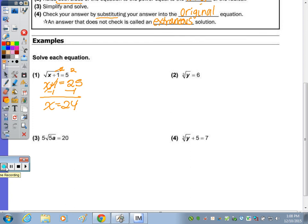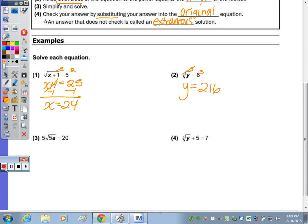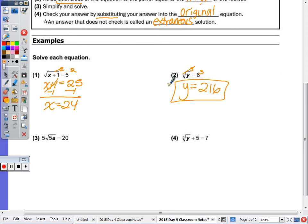In number 2, we have the cube root of y is equal to 6, so to undo the cube root or remove the radical symbol, we cube both sides. You need to show me the square in the cube, okay? Because if you don't and you get the next line wrong, I can't give you any partial credit. So now I have y equal to 6 times 6 times 6, 216. So if you do that on your calculator, is the cube root of 216, 6? And it is. So we're good.